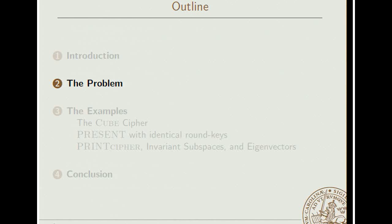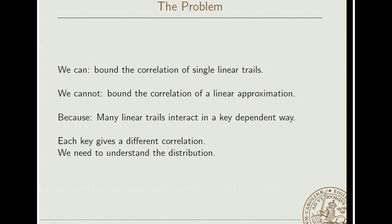So what about the problem? What do we know and what do we not know about how this behaves? What we can do is we can bound the correlation of a single trail. That's usually very straightforward. We just count the s-boxes, basically, or study how much non-linearity is introduced here at the minimum. What we cannot do is bound the correlation for a linear approximation. That is when we sum all of these trails together in a key-dependent way, what happens? Do they cancel out to zero, more or less? Or do they somehow magically all get the same sign contribution so it becomes this huge number?